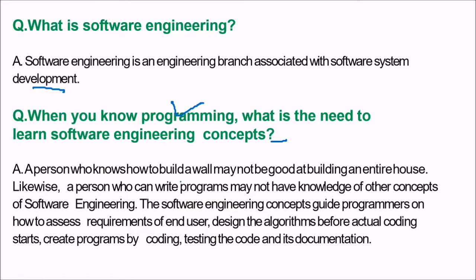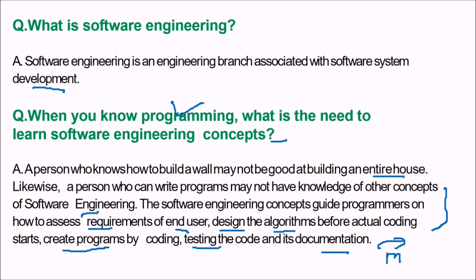A person who knows how to build a wall may not be good at building an entire house. Likewise, a person who can write programs may not have knowledge of other software engineering concepts. Software engineering concepts guide programmers on how to assess requirements of the end user, design the algorithm before actual coding, create programs based on the design, test the code, maintain documentation with quality, and handle maintenance after delivery.